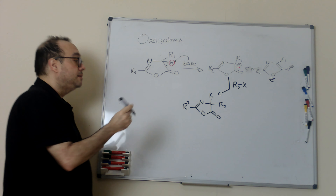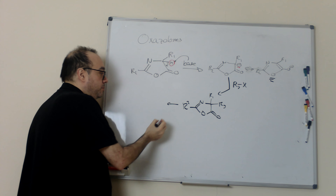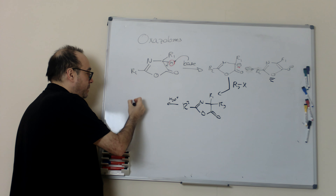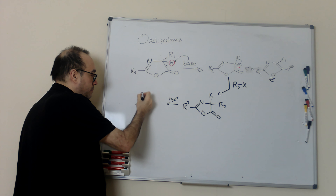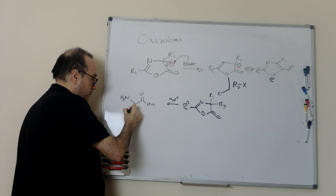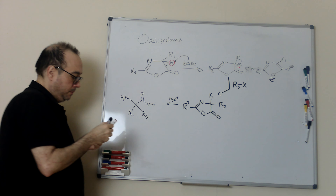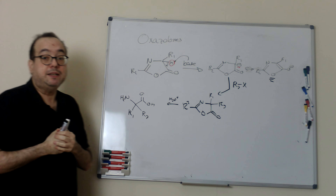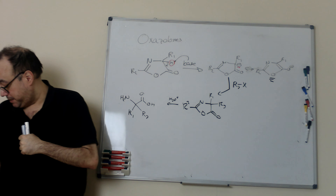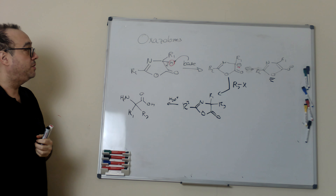This is important because this product is basically a quaternary alpha amino acid precursor. The only thing we need to do is hydrolyze in acidic media, for example, and what we get is the free amino acid. We can generate very easily quaternary alpha amino acids, which are very important in medicinal chemistry.